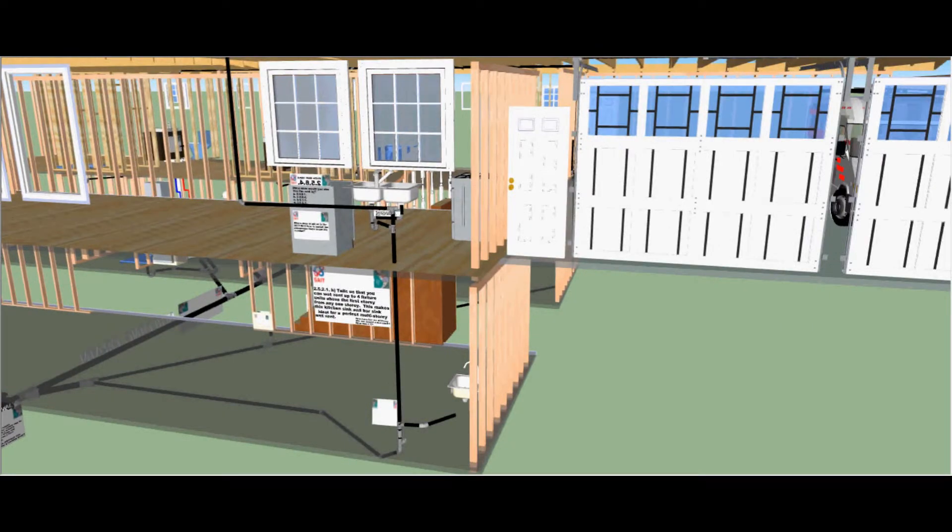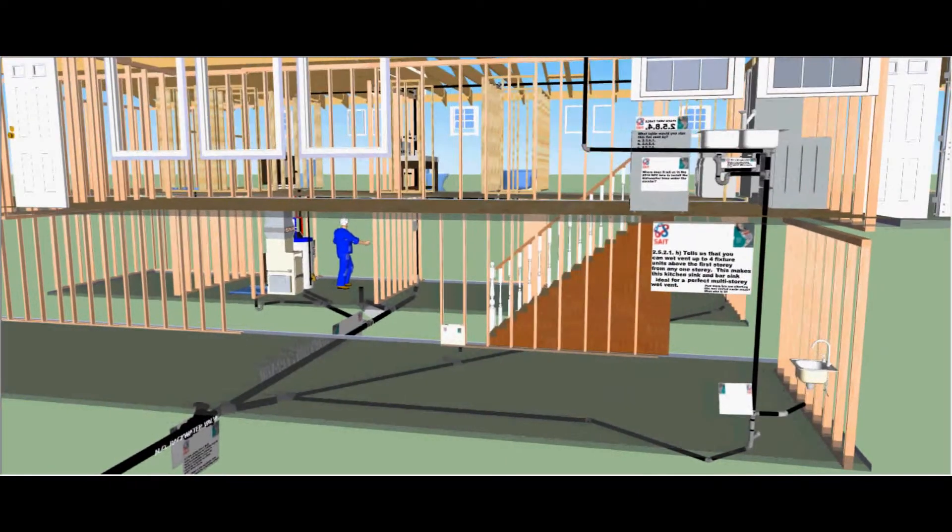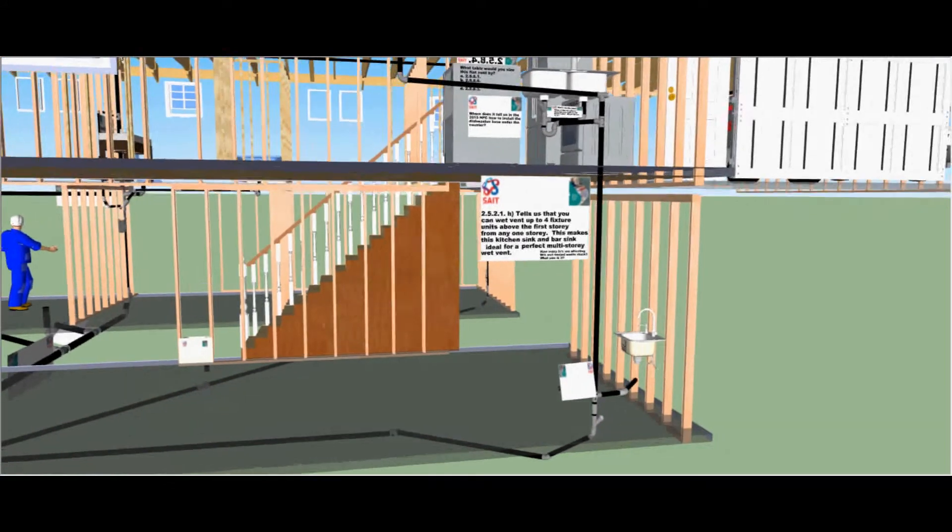With this in mind, let's go over a few code classes. First, let's try some wet venting. At the front of the house, we have a kitchen sink above and a bar sink below.